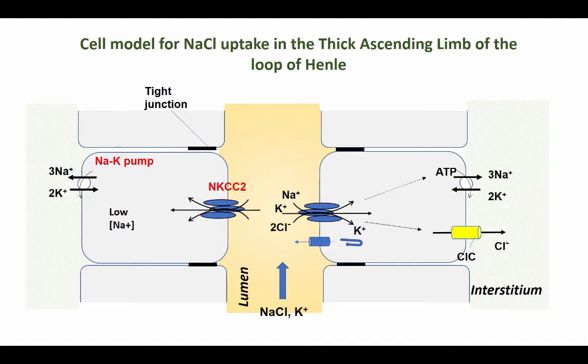Sodium chloride and potassium and other divalent cations that you will find being filtered will now appear in the tubular lumen in the thick ascending limb. There, sodium, potassium, and chloride will be picked up by the co-transporter.